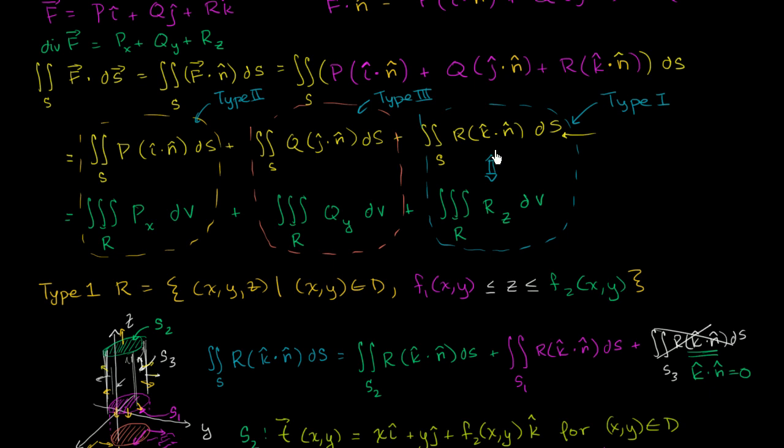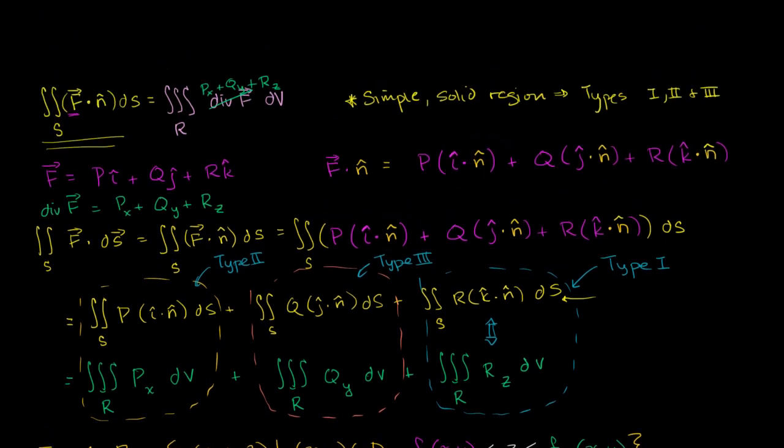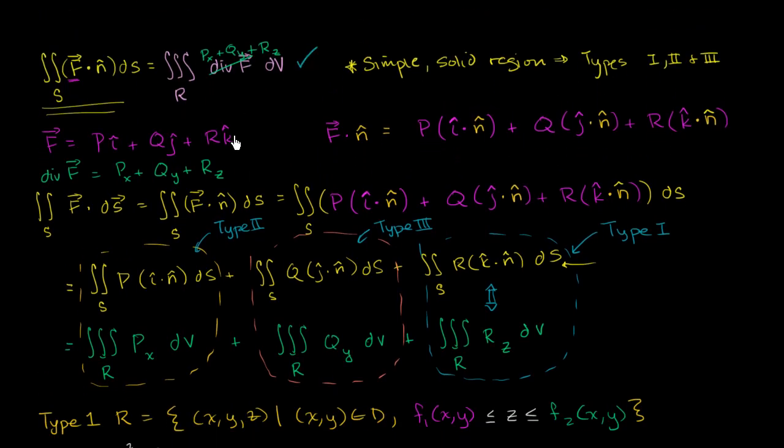You do the exact same argument with a type 2 region to show that this equals this, and type 3 region to show that this equals that. And you have your divergence theorem proved. We can consider ourselves done. Thank you.